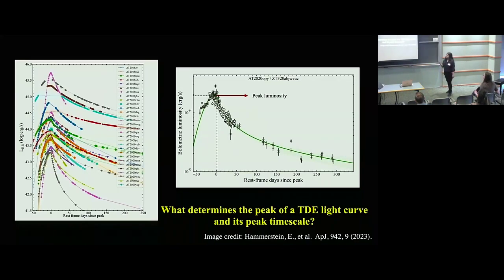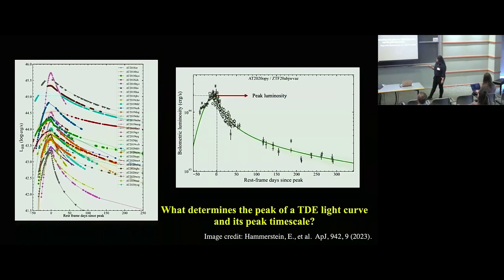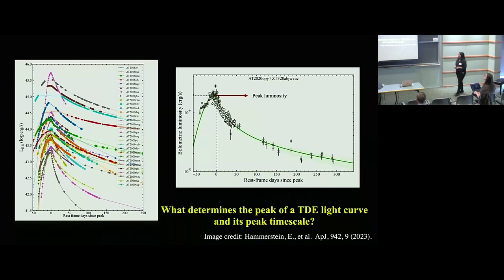I've taken here a set of light curves observed by the ZTF, from the paper by Erica Hammerstein. If you stare at any of these light curves, what you see is that they rise and peak on a timescale of something like 30 to 50 days. Here I've singled out one of those light curves to highlight that peak luminosity is attained on a timescale of something like 50 days. What we're trying to address in this paper is what determines this peak timescale associated with TDE light curves and whether we can correlate these with stellar or black hole parameters.